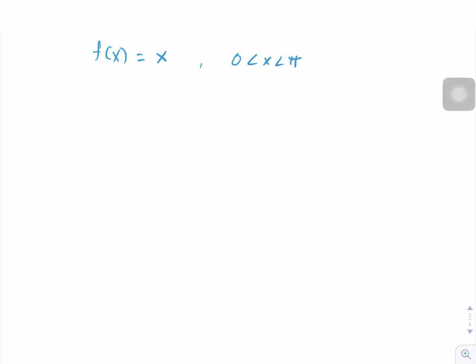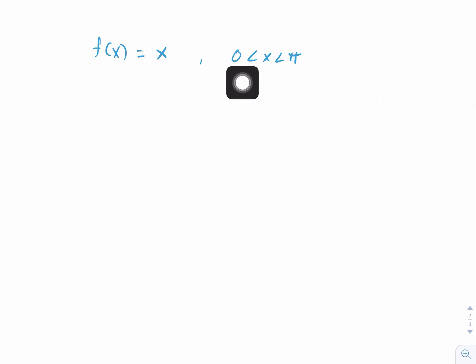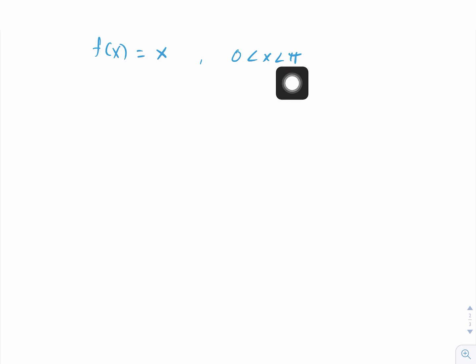Now let's look at this example. Let's say we have f(x) equals x and our interval is from 0 to π, and we want to find the Fourier cosine series.